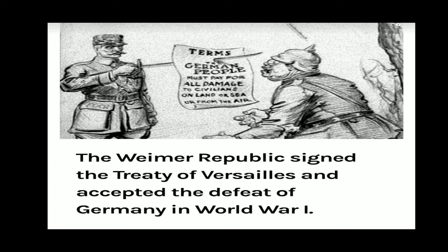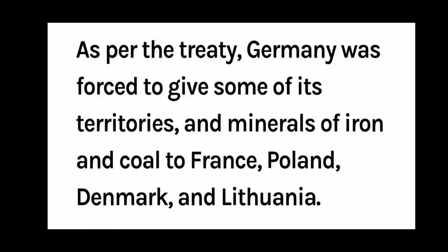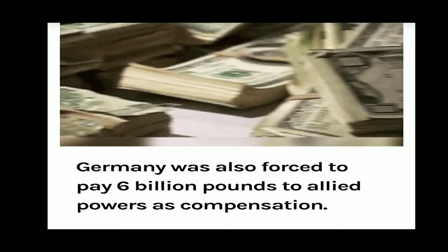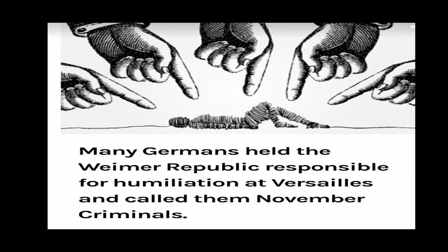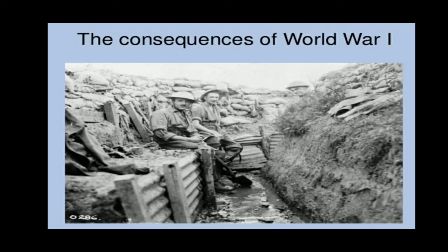The Weimar Republic signed the Treaty of Versailles and accepted the defeat of Germany in World War I. As per the treaty, Germany was forced to give some of its territories and minerals of iron and coal to France, Poland, Denmark, and Lithuania. Germany was also forced to pay 6 billion pounds to Allied powers as compensation. Germany's military power was reduced and Allied powers took all its foreign colonies. Many Germans held the Weimar Republic responsible for the humiliation at Versailles and called them November criminals.